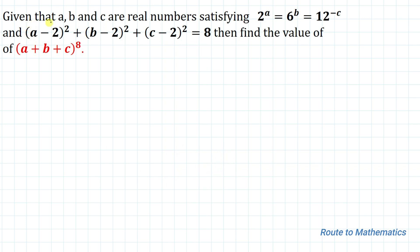The given question is: given that a, b and c are real numbers satisfying 2 to the power a equals 6 to the power b equals 12 to the power minus c, and the second equation is (a minus 2) squared plus (b minus 2) squared plus (c minus 2) squared equals 8. Find the value of (a plus b plus c) to the power 8.